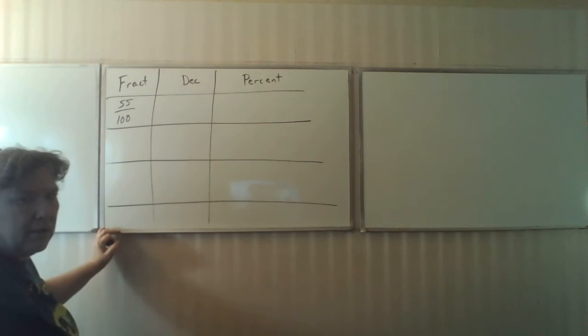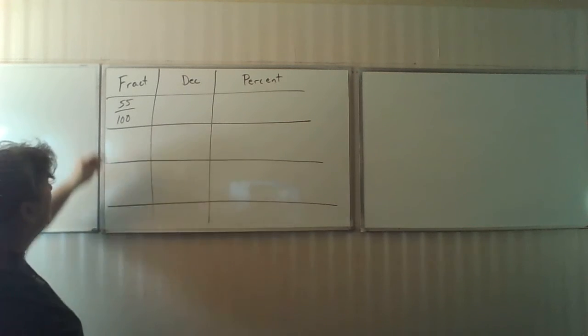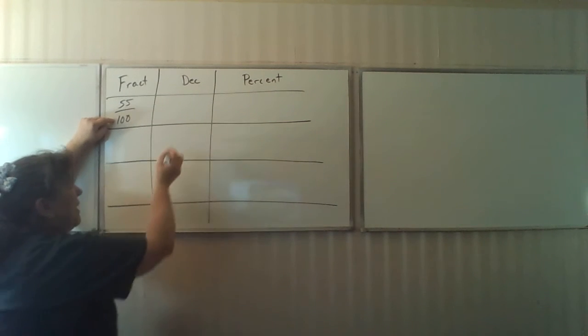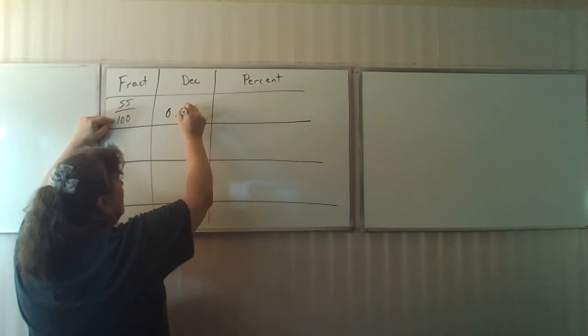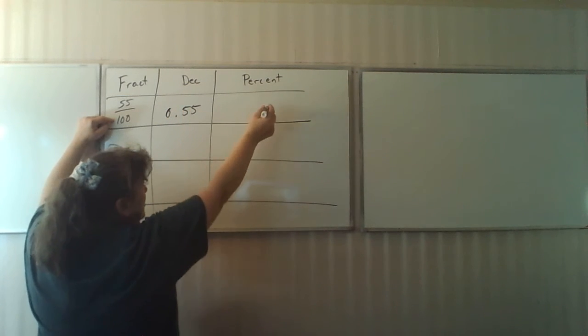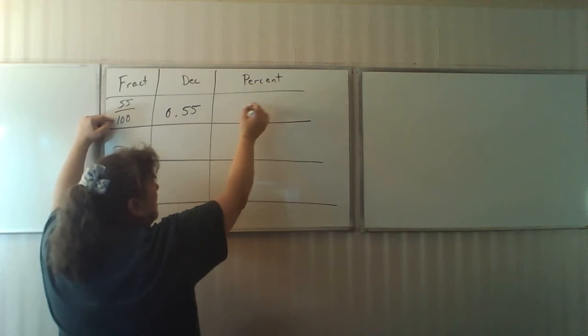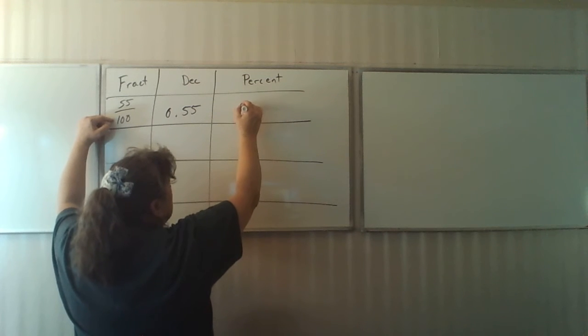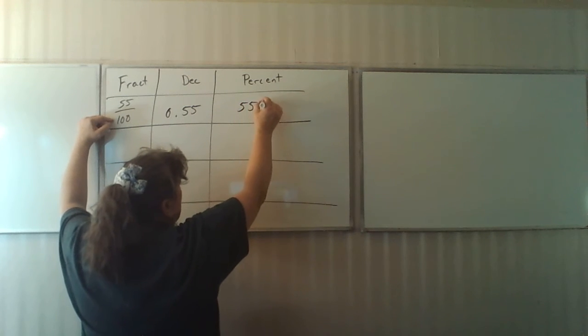Okay, to change that to a percent, we're going to divide 55 by 100, and you're going to get 0.55. And then to turn it into a percent, multiply by 100 percent, is going to give you 55 percent.